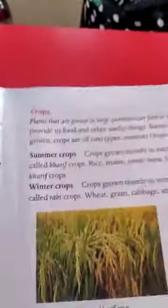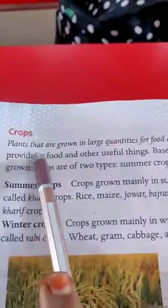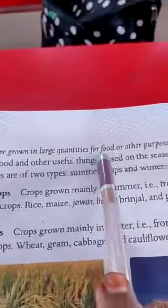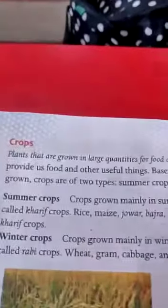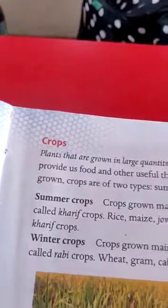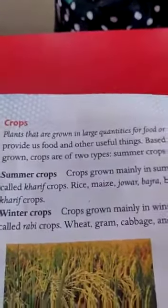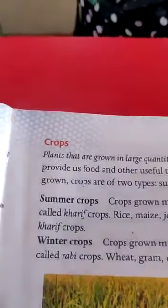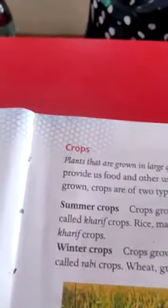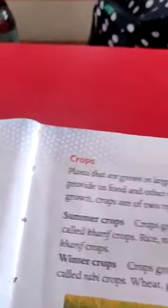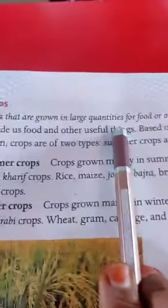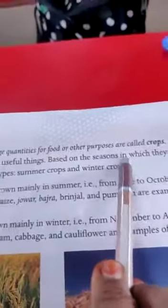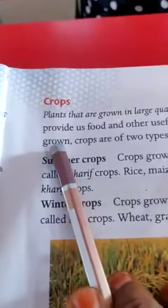Next is crops. Plants that are grown in large quantities for food and other purposes are called crops. The crops provide us food and other useful things based on the season in which they are grown.